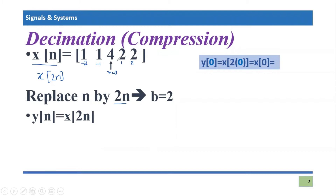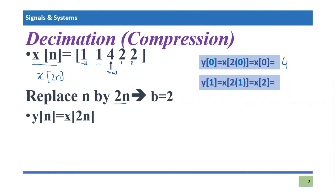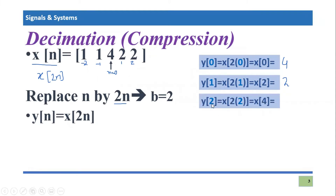For n=1: two times one equals two, so y(1) = x(2), and x(2) equals two. For n=2: two times two equals four, so y(2) = x(4). But x(3) is not defined — it would be zero — and x(4) is also not defined, so x(4) is zero.